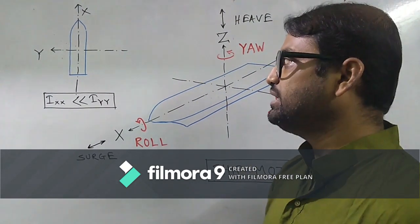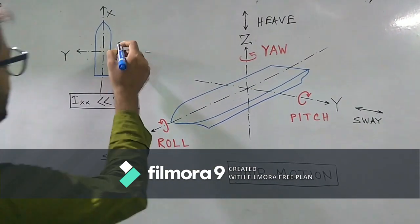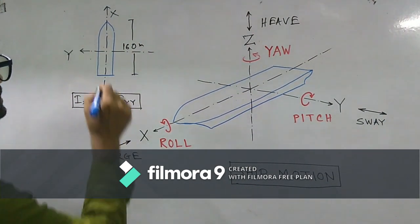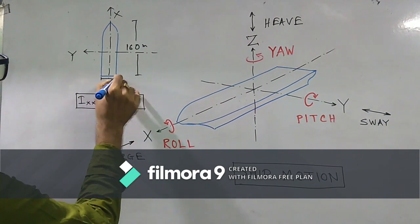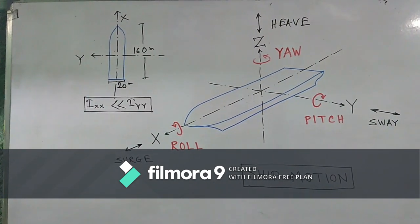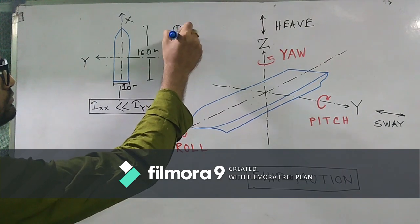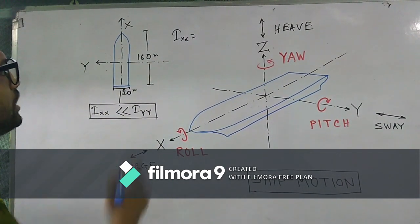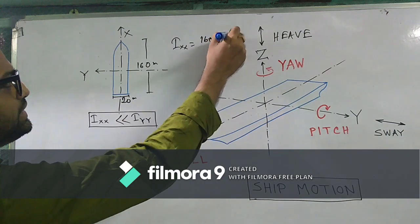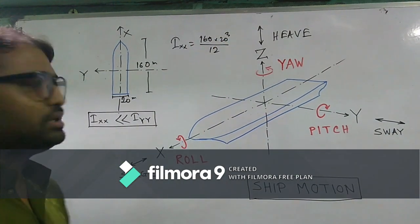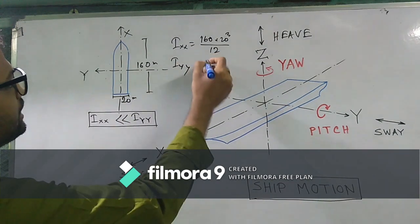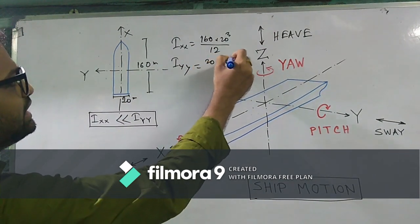That warship was having approximately, roughly its length was somewhat 160 meters. The width was around 21. I am considering as 20 meters, this width as 20 meters. I am not going into much detail of the calculation, but it is very obvious. If we want to calculate Ixx, it will be somewhat 160 into 20 cube divided by 12. I am considering it as a rectangle for simplification.